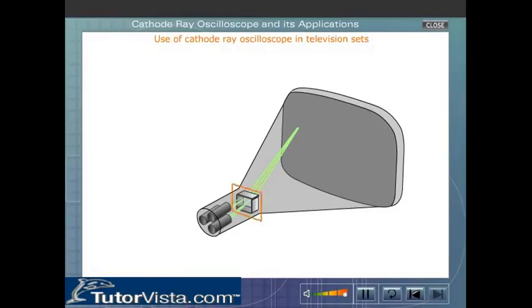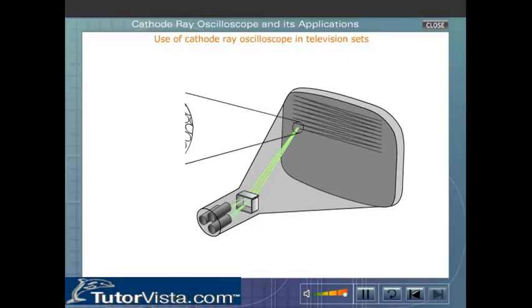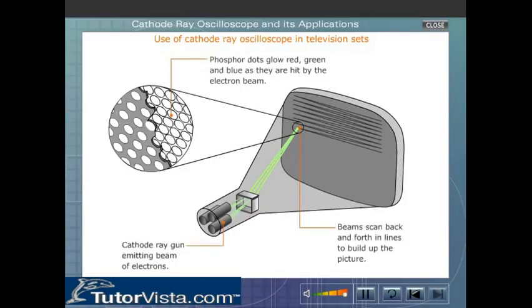The deflecting plates are used so that the electron beam scans the screen. The screen contains an array of tiny spots, each composed of three phosphor dots representing the primary colors: red, green, and blue.